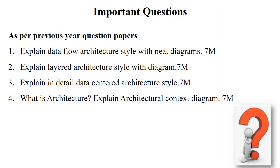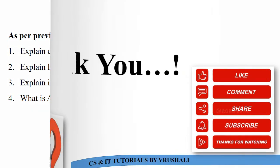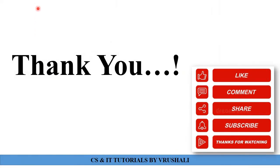These are some important questions from previous year question papers: explain data flow architecture with a neat diagram (7 marks), explain layered architecture with diagram (7 marks), explain data centered architecture (7 marks), what is architecture, and explain architectural context diagram with any architectural diagram as an example. You have to prepare these questions in detail. Thank you, keep learning.